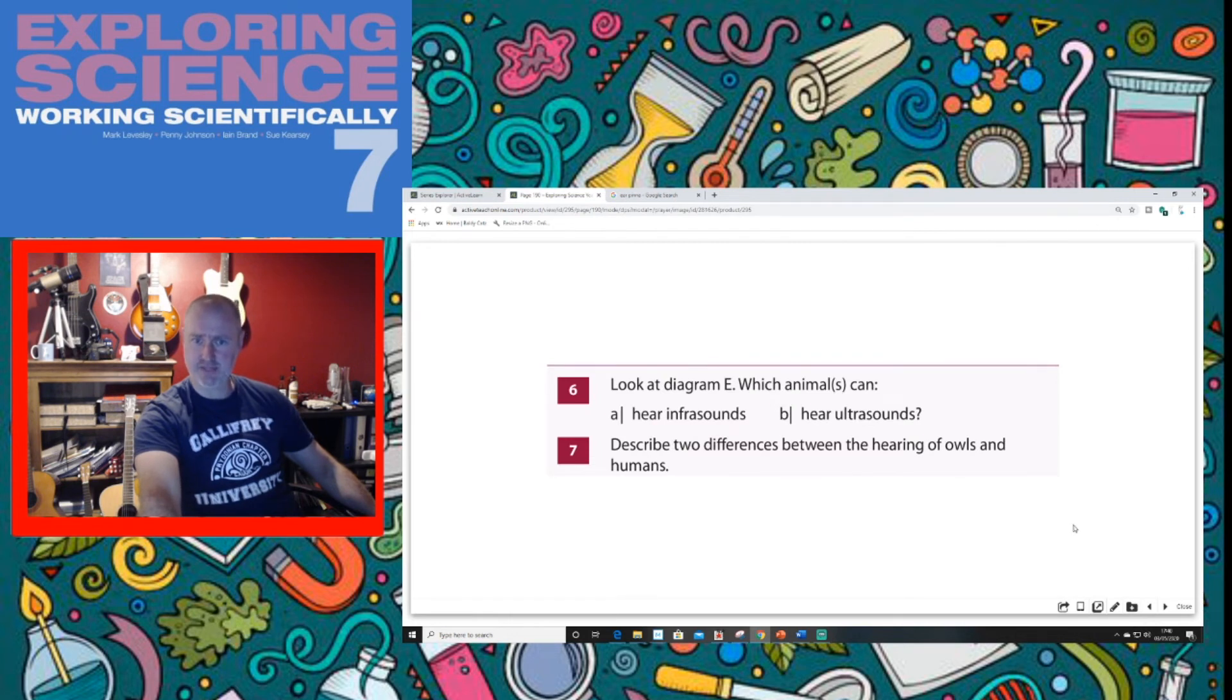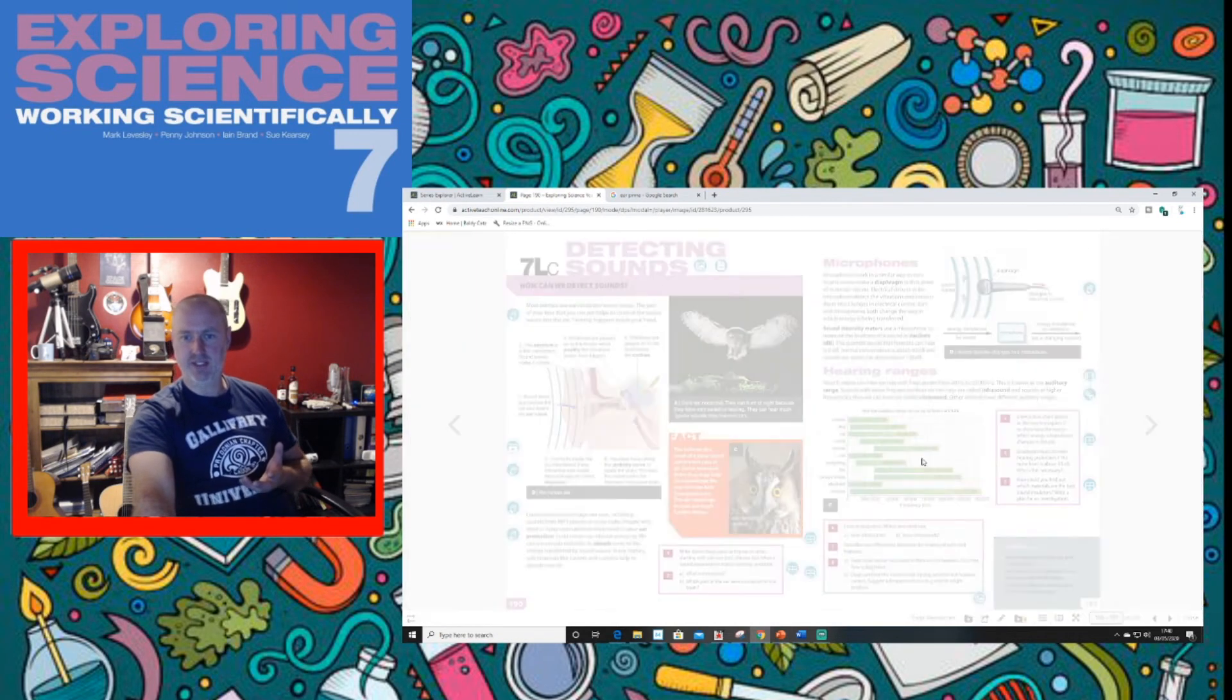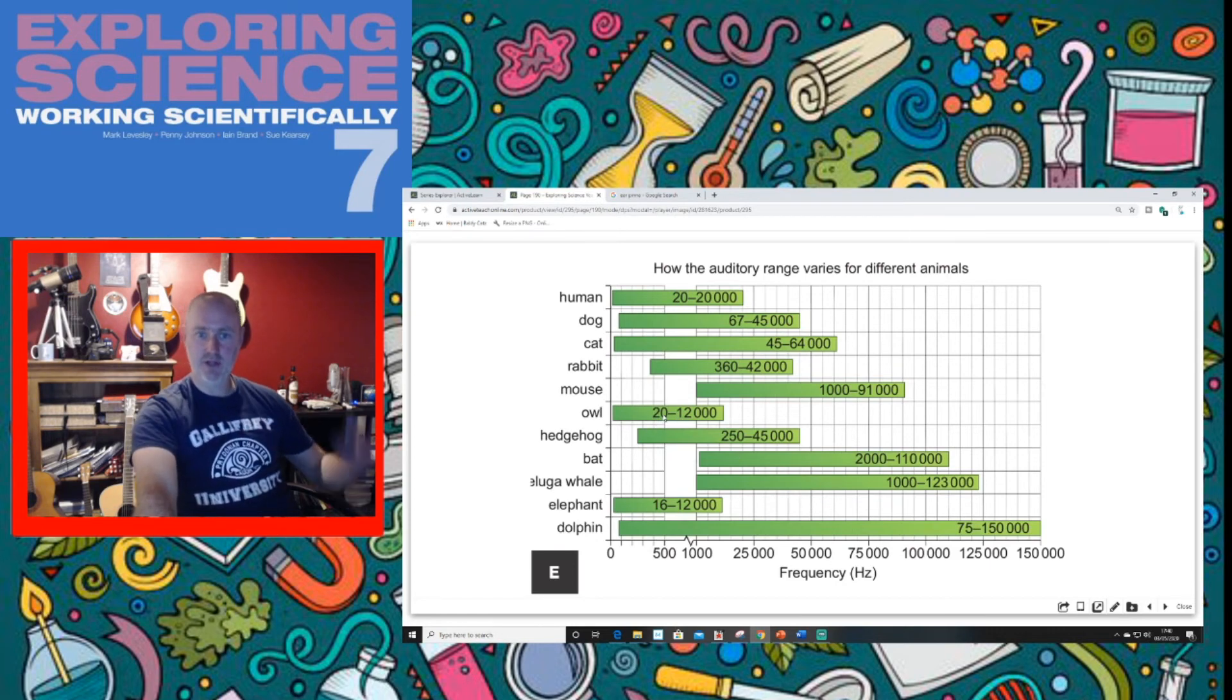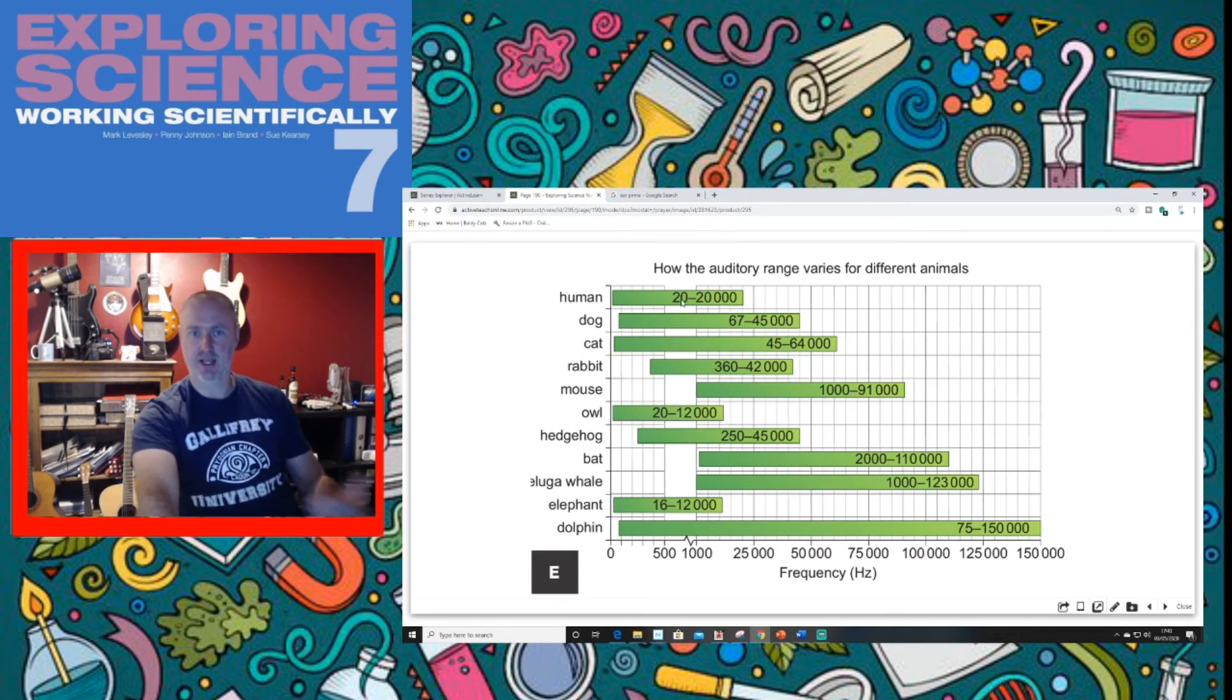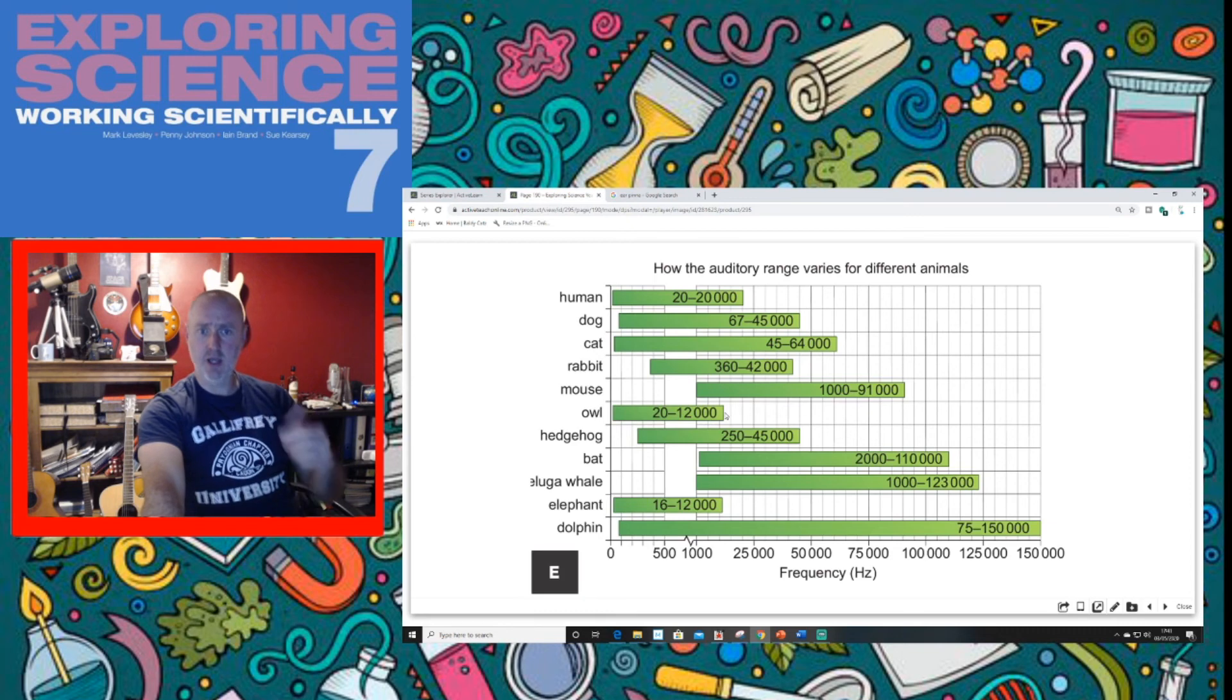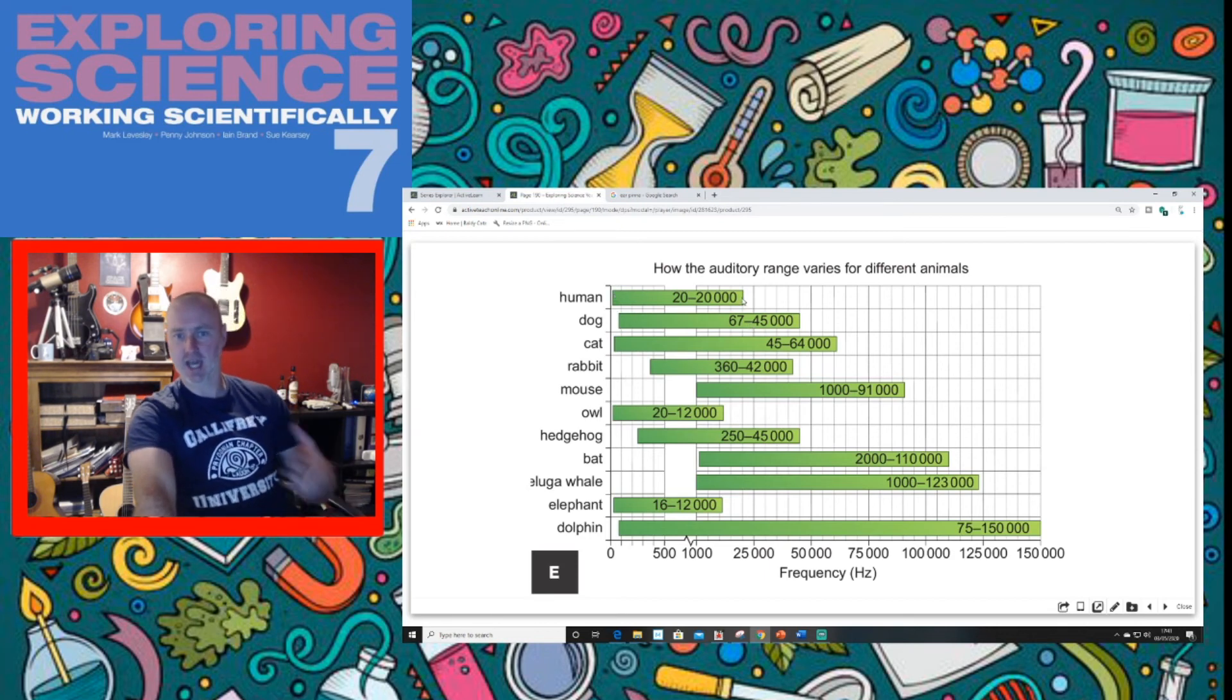And describe two differences between the hearing of owls and humans. On your assessment, quite often you're going to be asked to compare the hearing of different animals. And there's only two things we can really compare. We can compare the range, right? So with an owl, that goes from 20 to 12,000. So the range is 11,980. That's a small range. With humans, it's 19,980. We've got a bigger range. So we're going to discuss the range, we're going to compare that. And then we're going to discuss the lowest and highest frequencies.